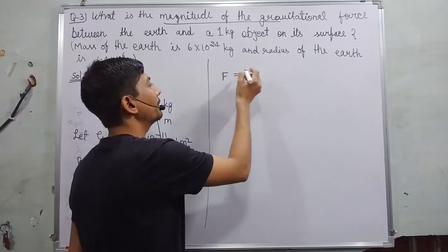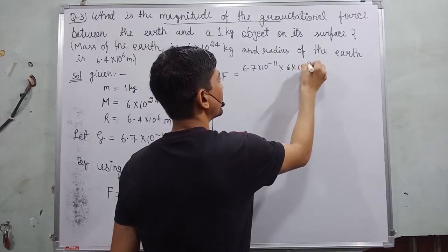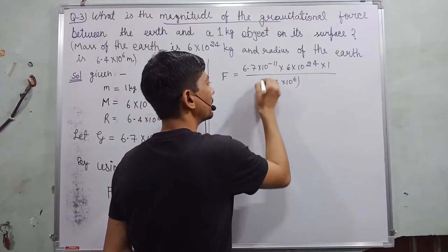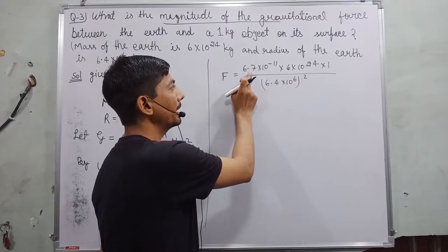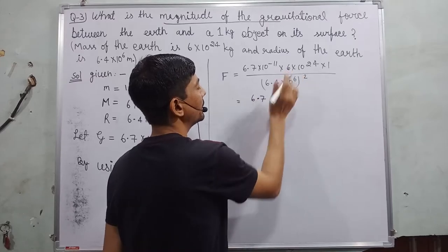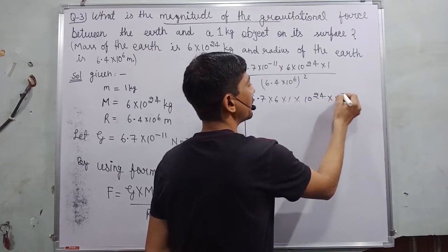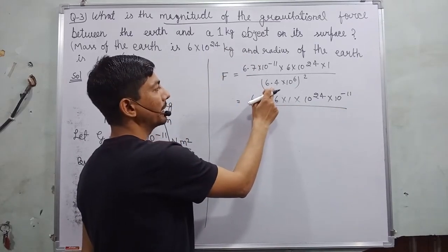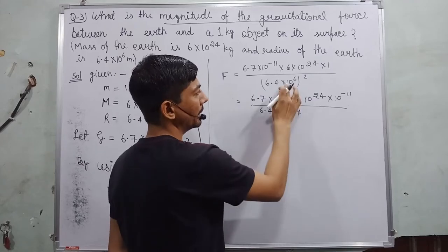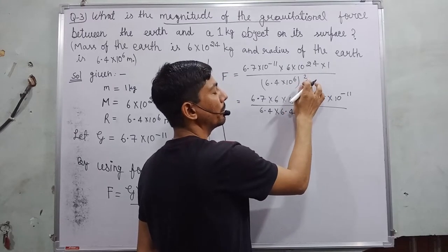Now it's time to substitute the value. F = 6.7 × 10⁻¹¹ × 6 × 10²⁴ × 1 over (6.4 × 10⁶)². In this case, you always write 10 to the power on one side. So 6.7 × 6 × 1 × 10²⁴ × 10⁻¹¹ over, when we square up this term, then it can be written as 6.4 × 6.4 × when we multiply power with power, 10⁶ to the 12, 6 into 2 multiply, so 12.